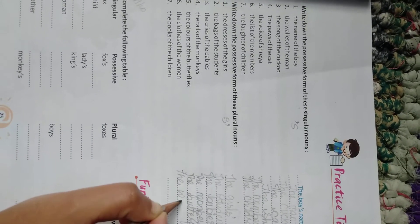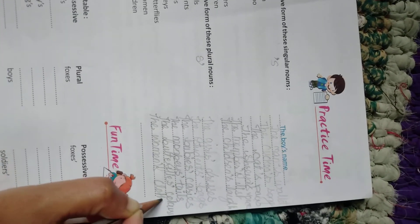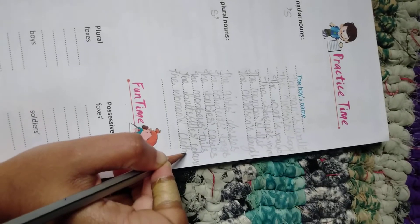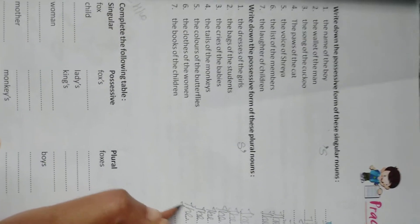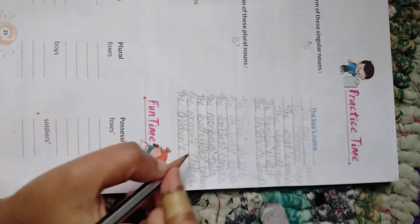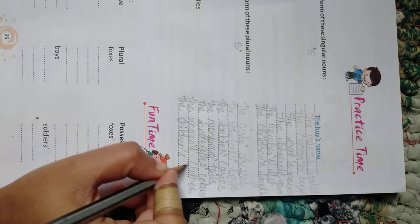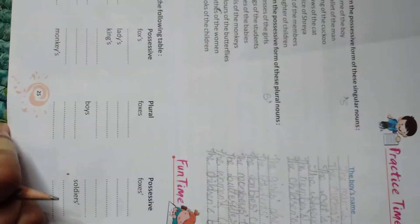The clothes of the women: the women's — W-O-M-E-N apostrophe S — clothes. Number seven: the book of the children — the children's book — B-O-O-K-S — books. So here we finish the singular and plural form in possessive case.